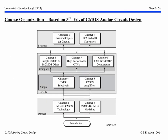This slide deals with the course organization, based upon the third edition of the CMOS analog circuit design textbook. It takes a bottom-up approach, starting with the introduction, moving to devices, then into simple circuits, more complex circuits, and finally into systems. In this course we will cover technology, modeling, sub-circuits, amplifiers, simple op-amps, higher performance op-amps, comparators, and D-to-A and A-to-D converters. We will not cover switched capacitor circuits in this class.